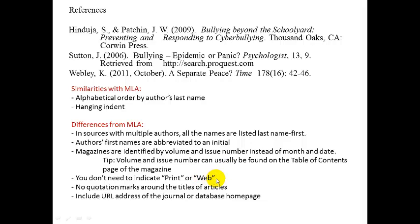In MLA we had to differentiate whether something was a web source or a print source, but in APA we do not need to do that. However, in APA there are no quotation marks around the titles of articles. In MLA, the article title 'Bullying: Epidemic or Panic?' had quotation marks, but in APA style we don't include those quotation marks — it just makes it a little cleaner and easier to read. Notice also that in the web source entry, we did include the URL address — http, search.proquest.com — which will allow me or a reader to find this article or the database again.